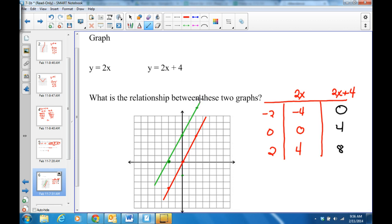What do you guys notice about these two lines? They're parallel, right? They never cross anywhere. So some ways to describe it is you could say they're parallel. They have the same slope, which we'll talk about later in the chapter.